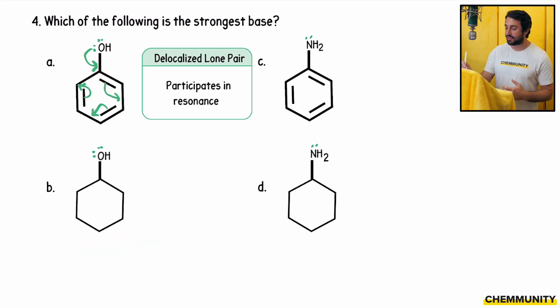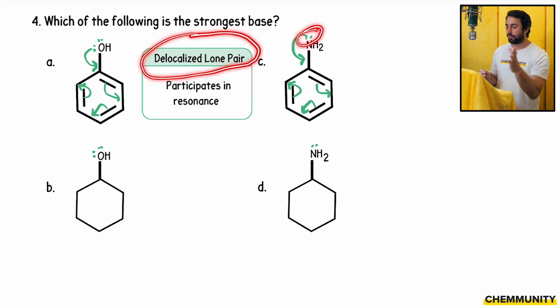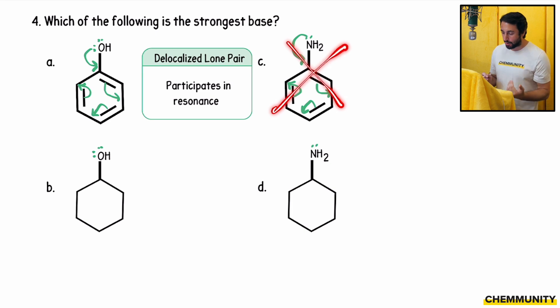Likewise, we can say the same thing for aniline. This lone pair is tied up in resonance with the rest of this molecule. We can push that lone pair around. That lone pair is delocalized. If that lone pair is delocalized, that electron density is spread out around the molecule. It is less available for accepting protons. That is not the case over here.